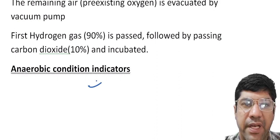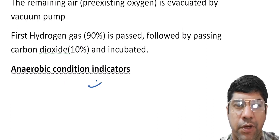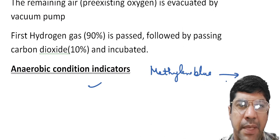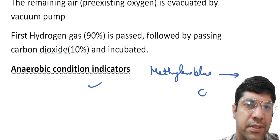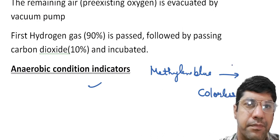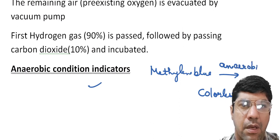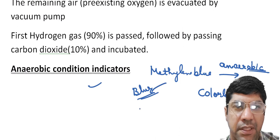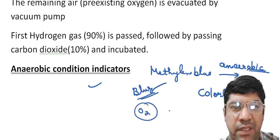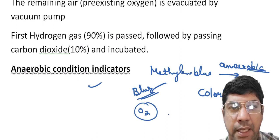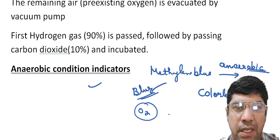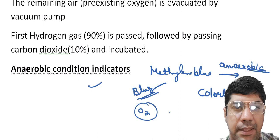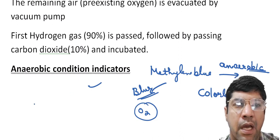These indicators are used to verify the anaerobic conditions in the culture jar. Reduced methylene blue is a common indicator; it remains colorless under anaerobic conditions but turns blue on exposure to oxygen. This color change helps to confirm the presence of anaerobic conditions. Anaerobic condition indicators are the tool to check if there is no oxygen in the culture jar or chamber, ensuring an oxygen-free environment.